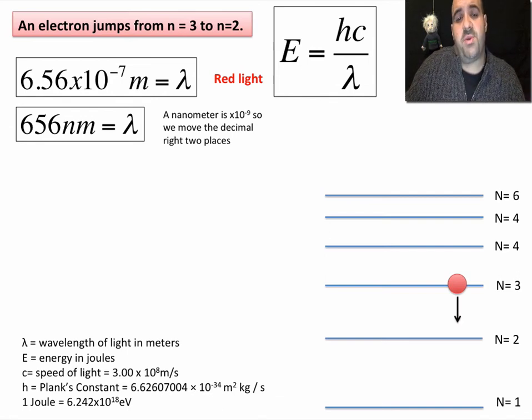So how would I visually draw this? We have an electron dropping from energy level three to energy level two, and it's emitting a photon of red light.